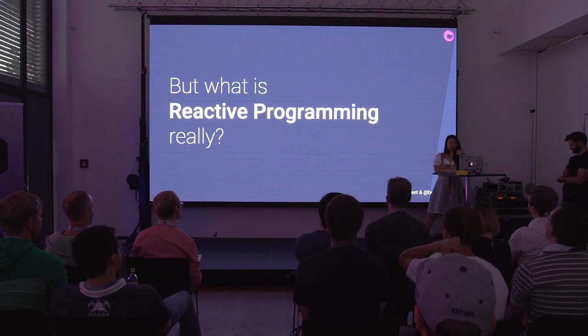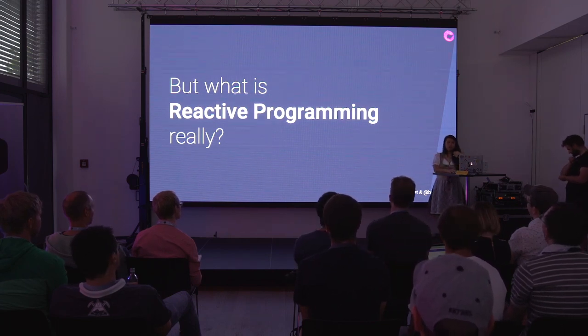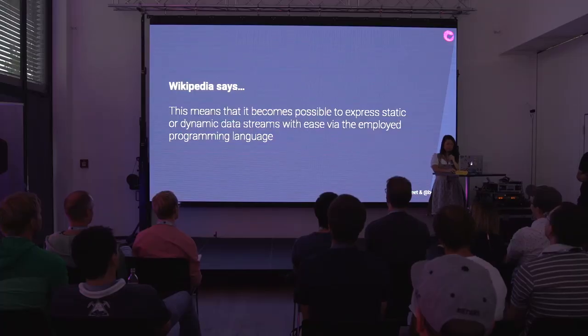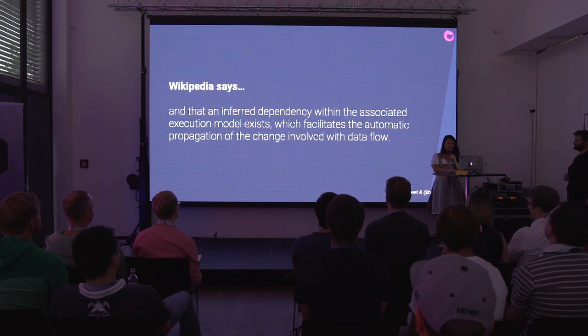Getting down to the point — what is reactive programming? Let's go through the Wikipedia explanation quickly. Wikipedia says reactive programming is a programming paradigm concerned with data streams and the propagation of change. This means it becomes possible to express static or dynamic data streams with ease via the employed programming language, and that an inferred dependency with the associated execution model exists.